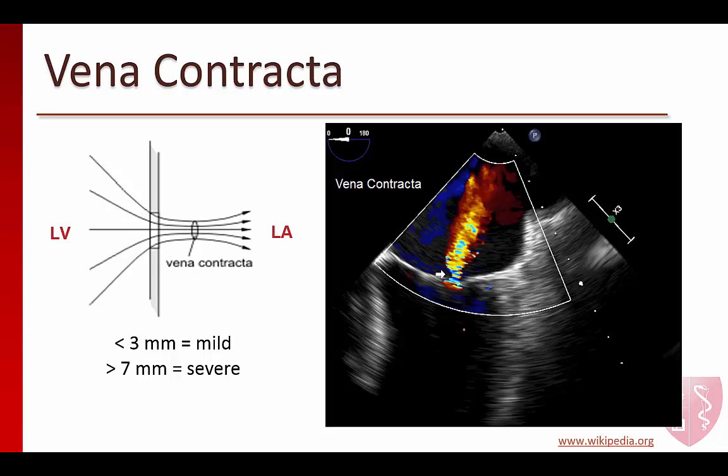The vena contracta refers to the narrowest part of the regurgitant jet just after it passes through the regurgitant orifice. It can be measured in any long-axis plane of the mitral valve and is best obtained using high-resolution zoomed views. The advantages of this technique are that it is easy to perform and can quickly distinguish mild from severe MR. Width less than three millimeters corresponds to mild MR and greater than six millimeters to severe MR. A major disadvantage is that it is unreliable in the setting of irregular, eccentric, or multiple jets. The image on the right shows the mid-esophageal four-chamber view rotated to the left, with the arrow pointing to where the vena contracta would be measured.